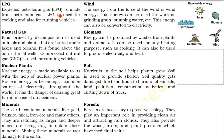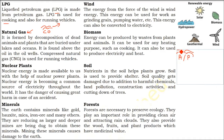LPG stands for Liquefied Petroleum Gas, used in homes for cooking and also for transportation. Natural gas is normally found above crude oil — wherever you find crude oil, you will find natural gas above it. Because of animal and plant decomposition buried under lakes and oceans millions of years ago, crude oil and natural gas are formed. CNG, compressed natural gas, is used for running vehicles.